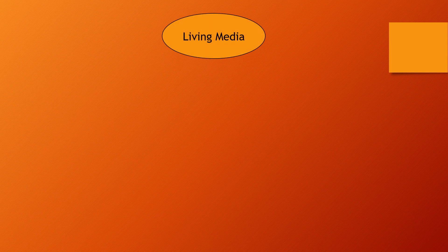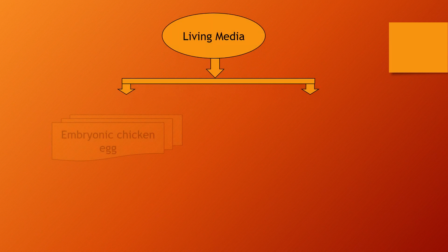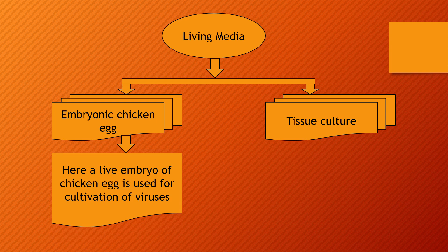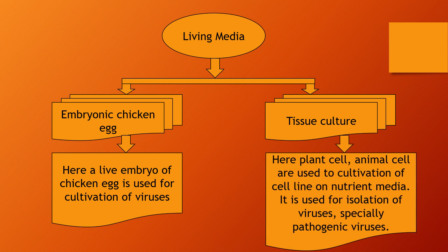The second type of culture media is living media, which is basically of two types: embryonic chicken egg and tissue culture. In the case of embryonic chicken egg, a live embryo of a chicken egg is used for cultivation of viruses. In tissue culture, plant or animal cells are used to cultivate a cell line on a nutrient media, and then these cell lines are used for isolation of viruses — specially pathogenic viruses, since viruses are intracellular parasites that require cells for their growth.